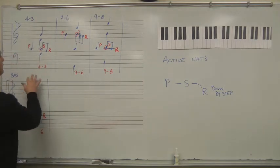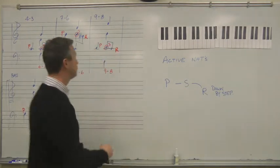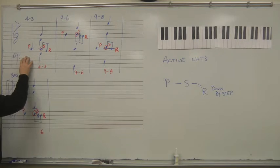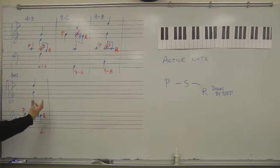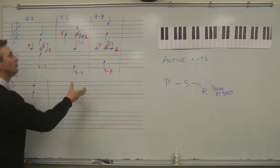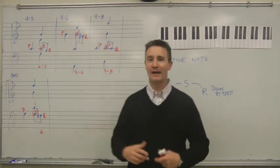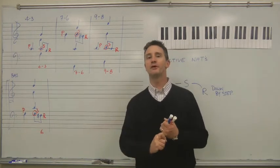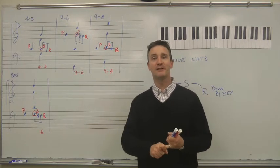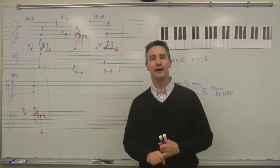Go back over this and make sure you understand the concept of a suspension — the three stages — and that you can see how I've labeled these 4-3, 7-6, 9-8, and the bass suspension. Make sure you understand what's harmonic, what's not harmonic, what occurs on the beat, and what resolves after the beat. Once you get all of that, we're ready to start putting that into our own harmonizations. If you have any questions, try watching the video again, and if you can't answer them yourself, bring the questions to class.